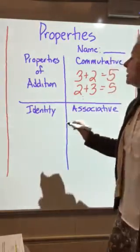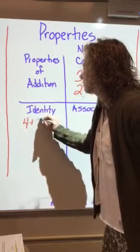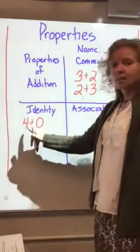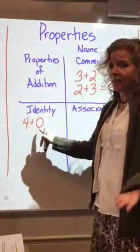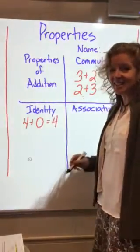Then you have to do the identity property. The identity of 4 is 4. If I add nothing to it, it's still 4. Its identity doesn't change.